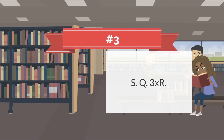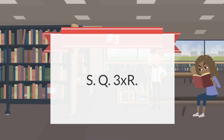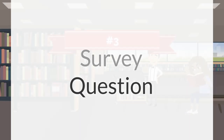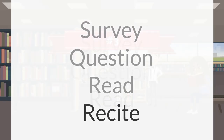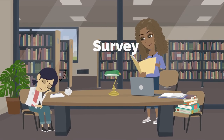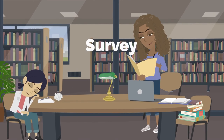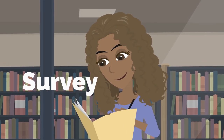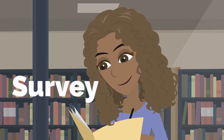Number three: SQ3R. SQ3R stands for survey, question, read, recite, and review. With survey, you basically scan your material — headings, summaries, graphs, pictures — basically cueing the brain for information.